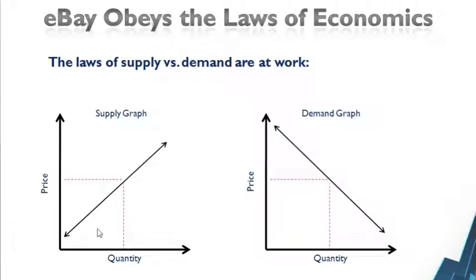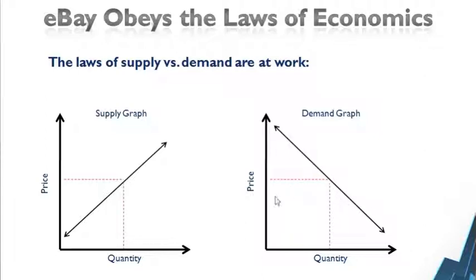To give a more detailed example, that means that more and more competition is willing to enter the marketplace with a given higher price. On the flip side, you'll see the demand graph — same thing — with price on the y-axis and quantity on the x-axis. So the graph is on a decline. The higher the price, the less people will consume or purchase.